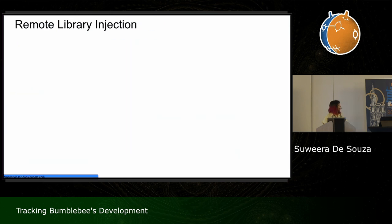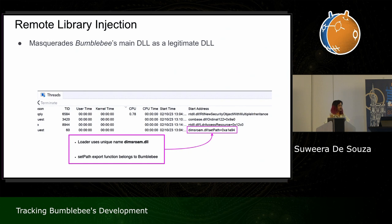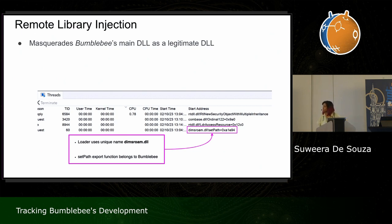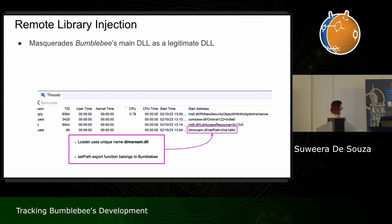Now let's look at the EDR evasion techniques. First is remote library injection — the EDR evasion used by the loader. The purpose of this technique is to masquerade Bumblebee's main DLL to appear as a running legitimate DLL. In this Process Explorer screenshot, you can see the active threads of Bumblebee's process — one of those threads is pointing to a Windows system library called DimsRoom. So you'd think DimsRoom is running, but in fact it's Bumblebee. The giveaway is that you can see it referencing the export function SetPath, which belongs to the malware.